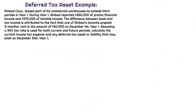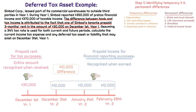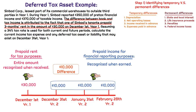Now we have another situation where Sinbad Corp leased part of its commercial warehouses to outside third parties in year one — Sinbad Corp is going to be the landlord. During year one, Sinbad reported $350,000 of pre-tax financial income and $370,000 of taxable income. Why the difference? The difference between book and tax income is attributed to the fact that one of Sinbad's tenants prepaid three months' rent in the amount of $30,000 on December 1st, year one. We want to determine the current income tax expense and any deferred tax asset or liability that may exist on December 31st, year one. We have a higher taxable income amount than what is being reported on the income statement.